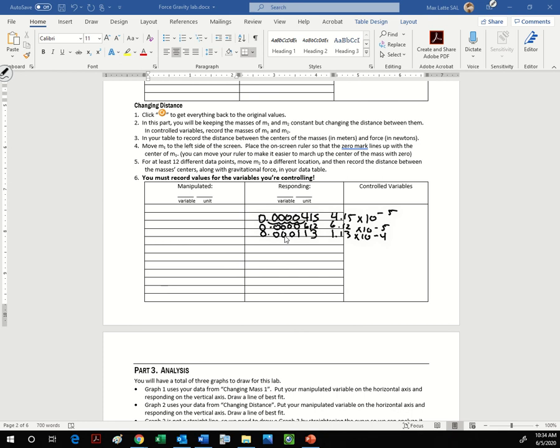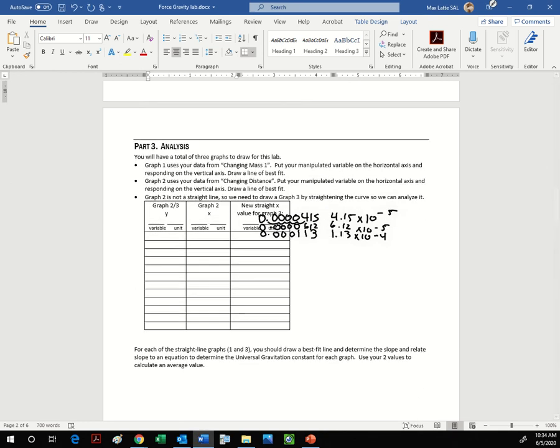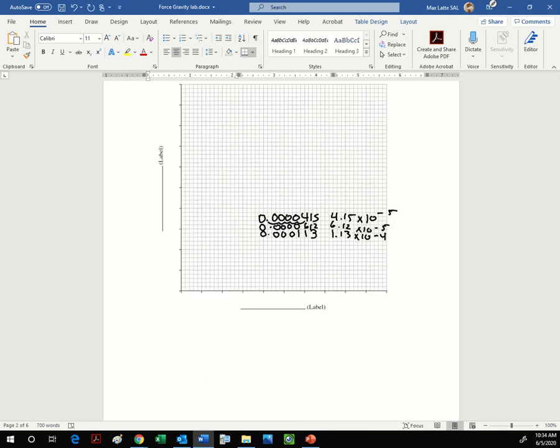So you're gonna run into a problem when you're graphing down here, right? Because your responding goes up here and they all have to be times 10 to the negative, well, they have to be the same. So what you're gonna do is instead of calling this 1.13 times 10 to the negative 4, you can make them all times 10 to the negative 5. So 1, 2, 3, 4, 5. So instead of calling this that, you call it 11.3 times 10 to the negative 5.